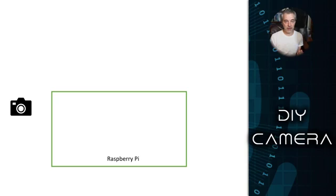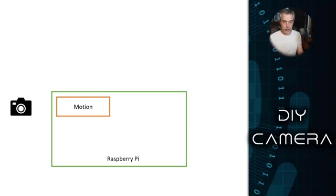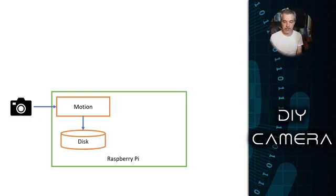On the Raspberry Pi, you'll have a piece of software called Motion, which is basically a daemon that listens to the camera output — watching for changes in the frames. If it detects changes in the frames, it detects motion. When it detects motion, it writes those results to the disc on the device as an image. So the camera writes to Motion, then Motion writes the output to disc.